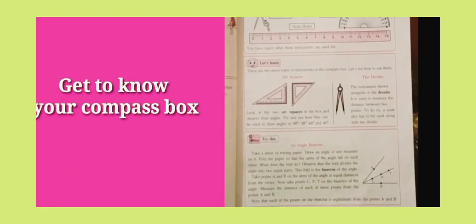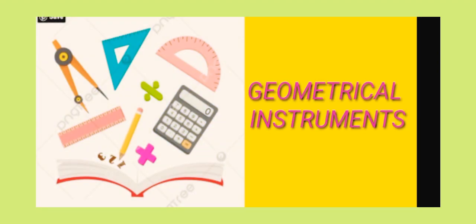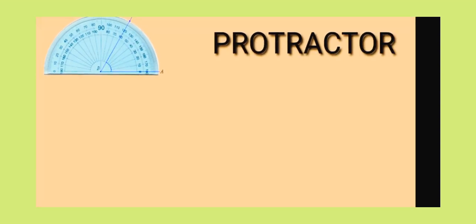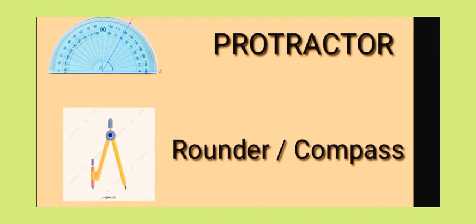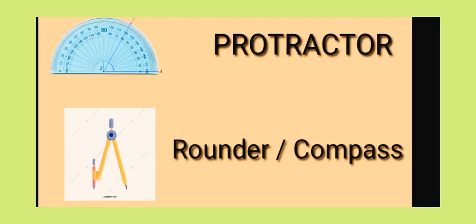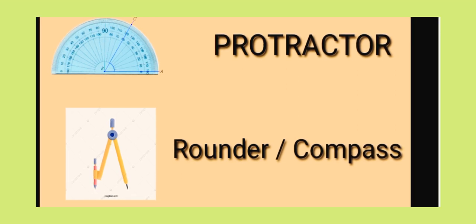In this video, get to know your compass box. See the textbook page, students. You must be having so many geometrical instruments in your geometry box. In your compass box, you must have seen a protractor — the use and handling of the protractor we already learned in a previous video. The next one is the rounder. You must have been using your rounder for making or drawing a circle of given length. You can also draw an arc with it. It is very important for geometrical construction work and it is useful for us in this chapter.